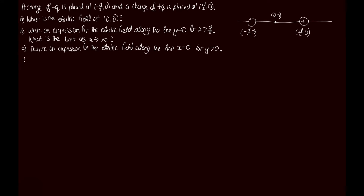For part a, we need to work out the electric field at the origin. We can use the law of superposition — work out the electric field from the positive charge and the electric field from the negative charge. Electric field lines go out of the positive charge, so to the left at the origin, and electric field lines go into the negative charge, so also to the left at that point.